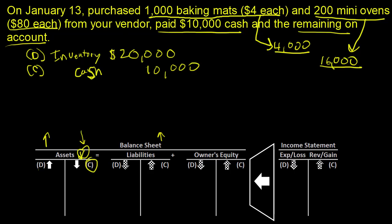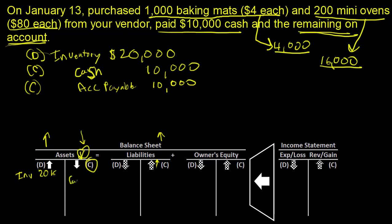Debits don't equal credits yet, because that's not all we did — we had the remaining on account. So we're going to have an accounts payable, and that is a liability. We're going to increase our liabilities by having a credit of accounts payable of $10,000. Accounts payable is frequently written as AP at $10,000, and that's going up.